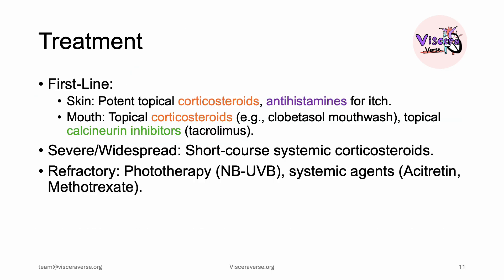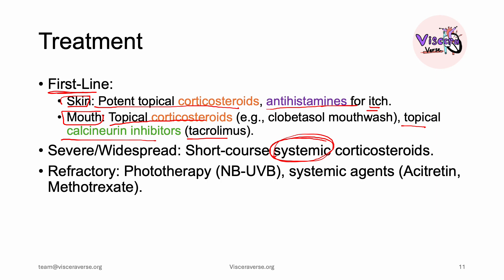Treatment is tailored to the site and severity. The goal is to control inflammation and relieve symptoms, particularly itching. First-line treatment for skin lichen planus includes potent topical corticosteroids and antihistamines for itching. For the mouth, we use topical corticosteroids and topical calcineurin inhibitors such as tacrolimus, especially for intertriginous areas. For severe widespread lichen planus, systemic corticosteroids are indicated. If refractory, phototherapy with narrowband UVB is used, or systemic agents such as methotrexate to inhibit the immune response.